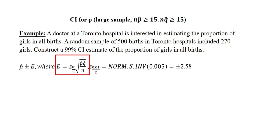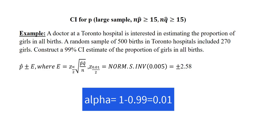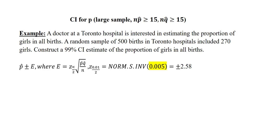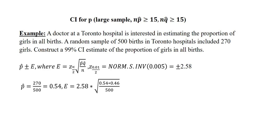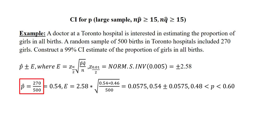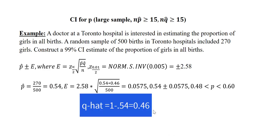My E, the margin of error, is obtained by taking the critical value from the standard normal table multiplied by the square root of P̂ times Q̂ divided by N. My confidence interval is at 99%, so my alpha will be 1 minus 0.99, which will be 0.01. When I divide that by 2, I get 0.005. Going into Excel and typing NORM.S.INV(0.005), it returns the critical value on both tails, which will be 2.58. Now I compute my margin of error. My P̂, the sample proportion, is 270 out of 500, which is 0.54. My Q̂ will be 1 minus 0.54, which is 0.46.